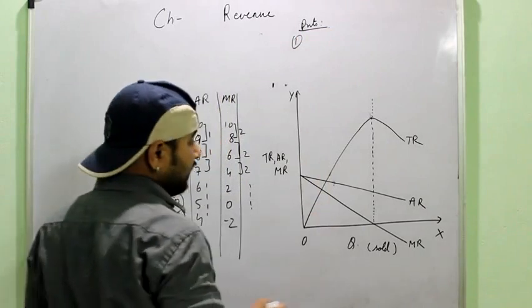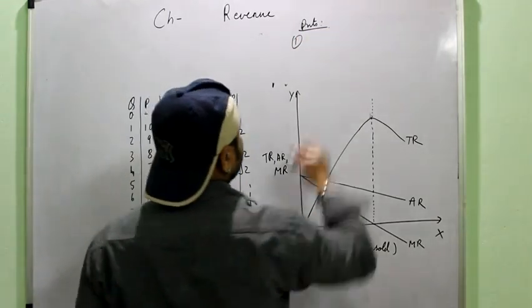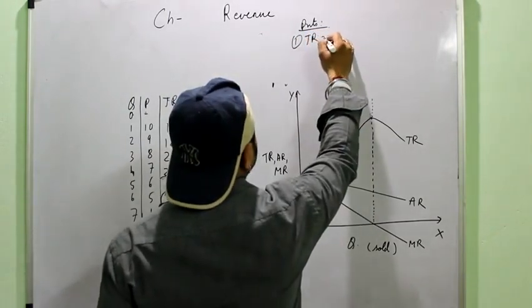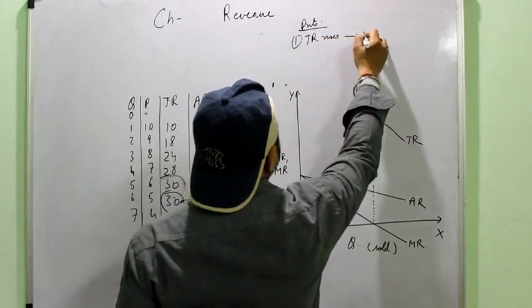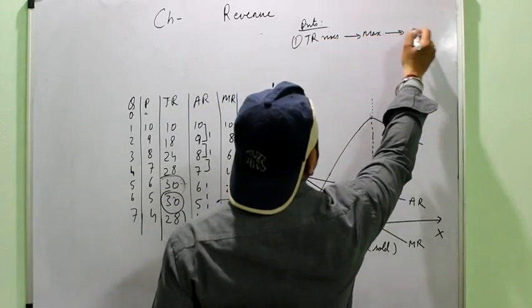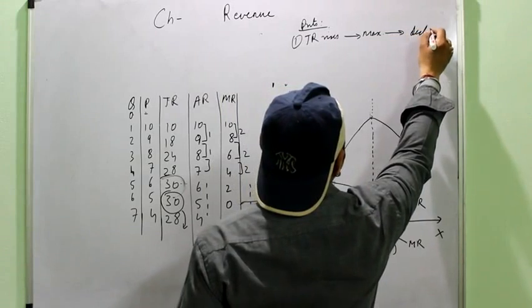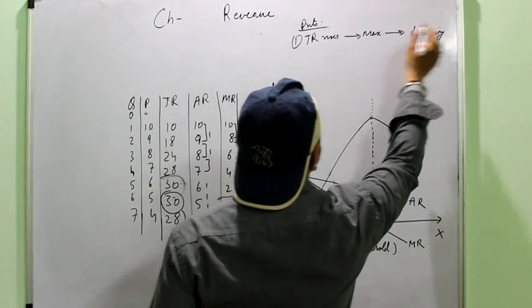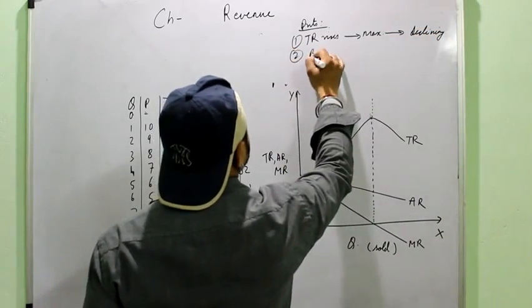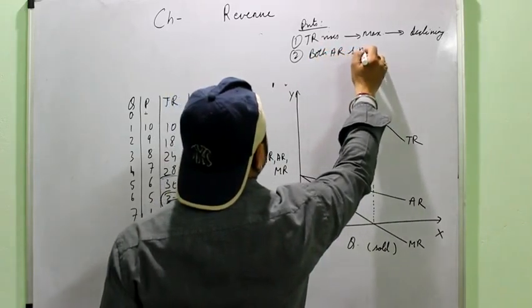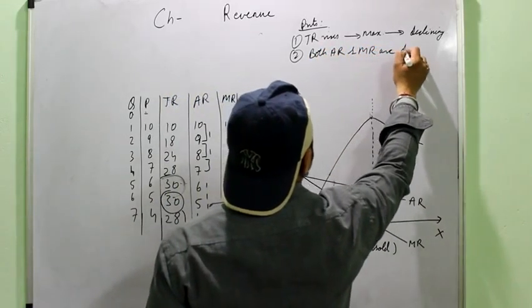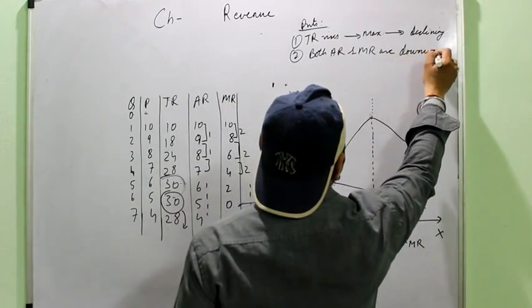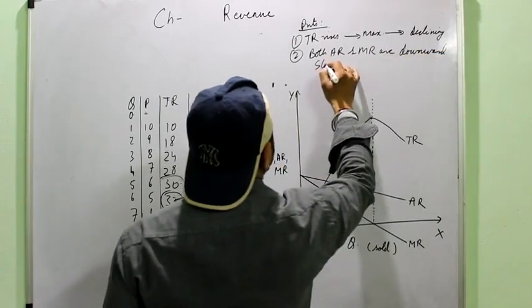First thing that you observe is that here TR is inverse U-shape. First it rises, reaches a maximum and then starts declining. Second, both AR and MR are downward sloping.